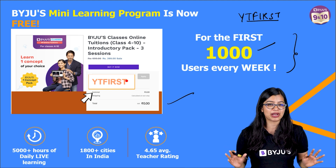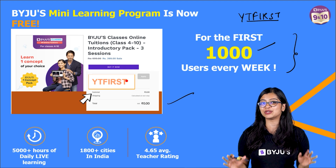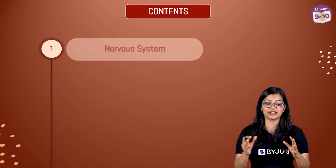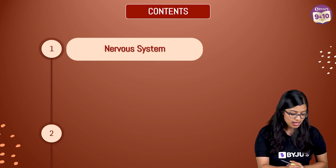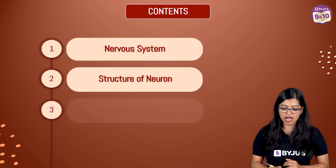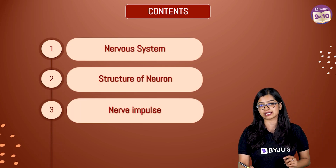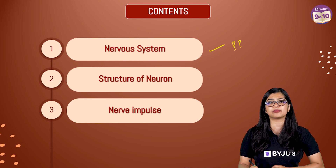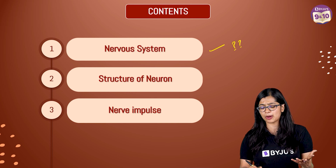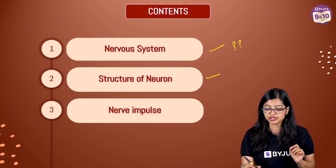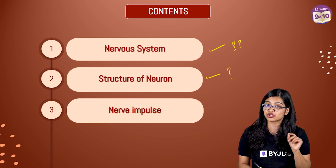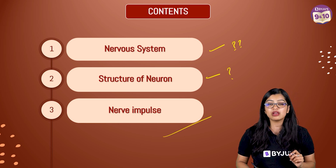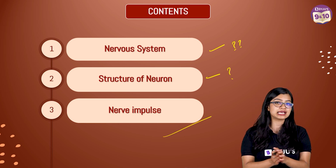Now let's get started with our class on nervous tissue. Today we are going to cover what the nervous system is and why we need it, then the structure and function of the neuron, and we will also learn about nerve impulses.